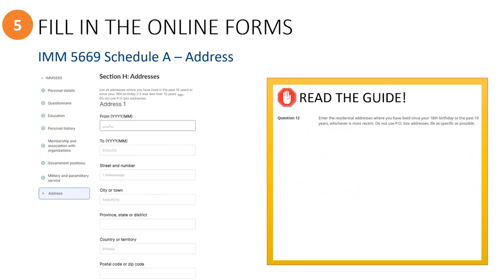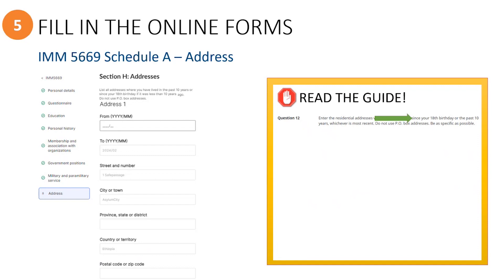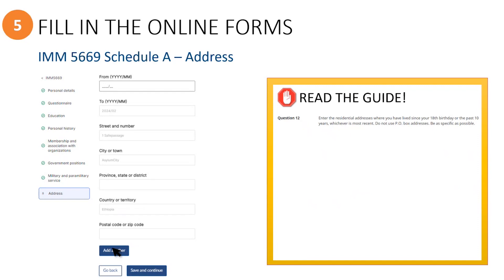This section is where you will list all of the addresses where the refugee has previously lived. Begin by filling in details about their current address. If this is the Principal Applicant's Schedule A form, the first address entry will have most of the information already auto-completed. If you need to edit the information, you would need to go back to the Principal Applicant's profile page. Include all places they have lived since their 18th birthday or the past 10 years, providing actual physical location addresses — no post office box addresses. Click Add Another to add more than one address, then click Save and Continue.